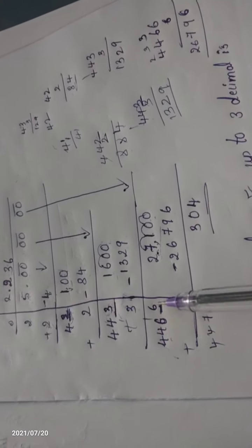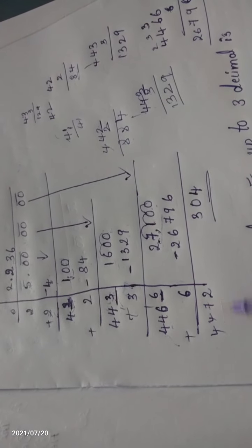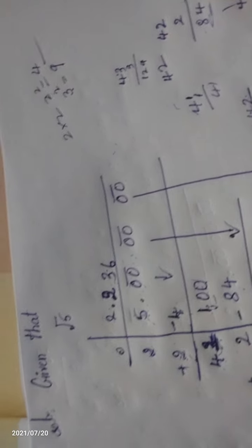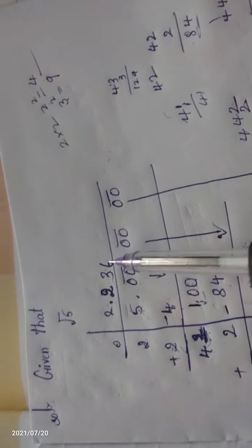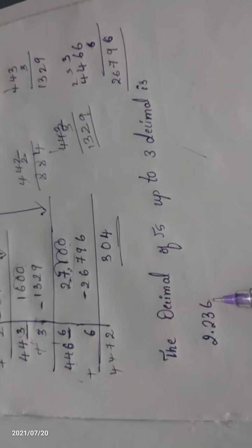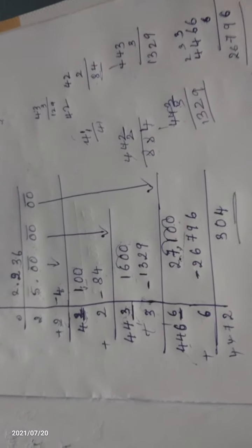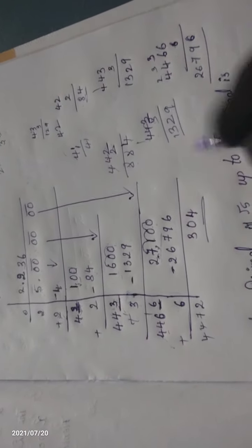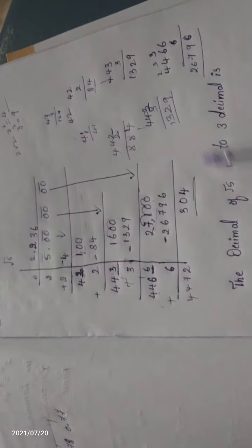So far we have the value of root 5 up to 3 decimal places. We stop the process because we have reached the required decimal places. This is a somewhat difficult problem — you need to practice it. In this chapter only root 5 and root 7 are of this type. Root 7 is your homework. Complete your notes up to question 6.1 and submit in the group. Today's class is completed. Thank you. Allah Hafez.